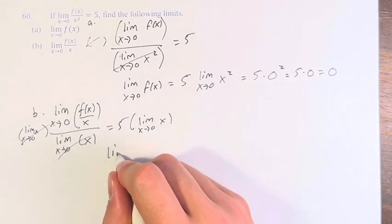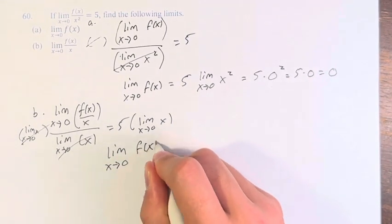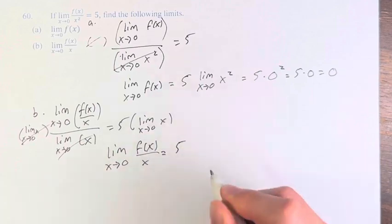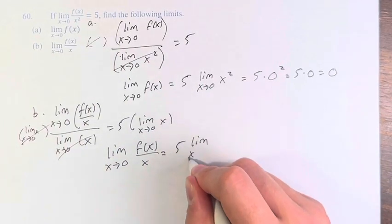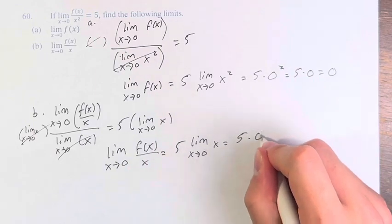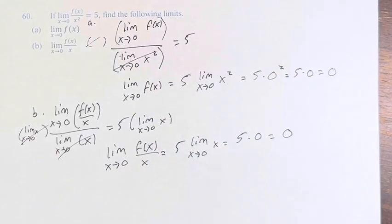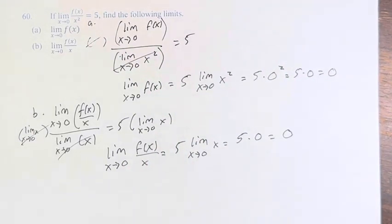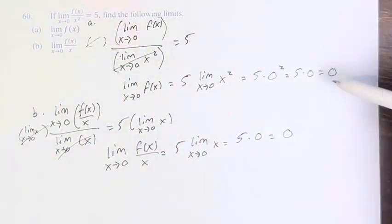And we're left with the limit as x approaches zero of f(x) over x is equal to 5 times the limit as x approaches zero of x. Now we can just plug in zero, this is 5 times zero, which is just zero. Therefore, both of these limits, given this original information, are equal to zero.